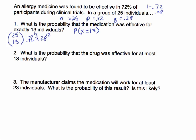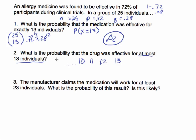So the probability that this drug is effective for exactly 13 individuals is 0.02. For Problem 2: what is the probability that the drug was effective for at most 13 individuals? At most 13 means it could also have been effective for 12, 11, 10, down to 2, 1, or 0. So we're looking for the sum of all individual probabilities from 0 through 13 — that is, P(X ≤ 13).